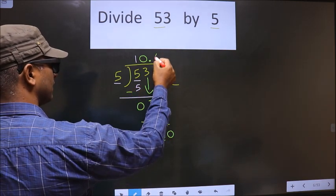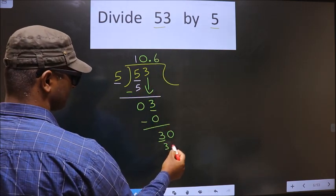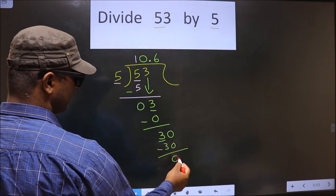Now here we got 30. When do we get 30 in 5 table? 5, 6, 30. So now you subtract. We get 0.